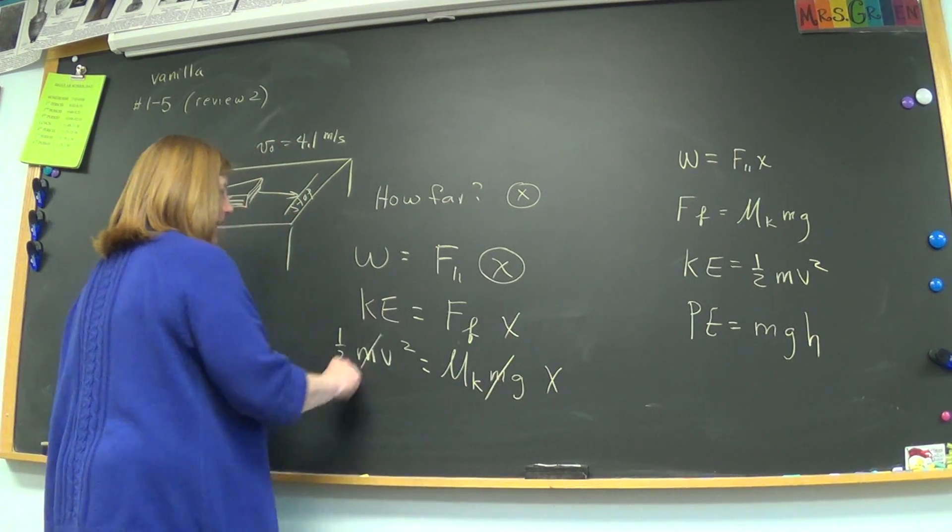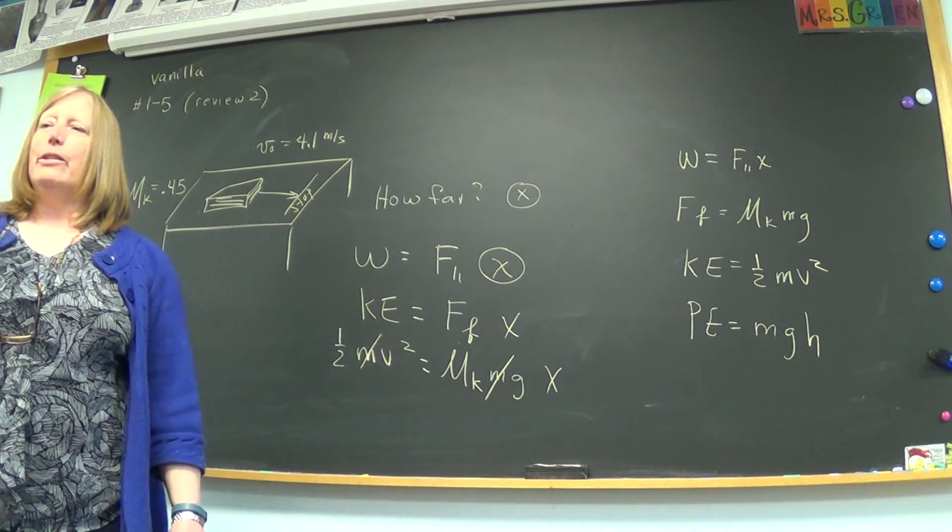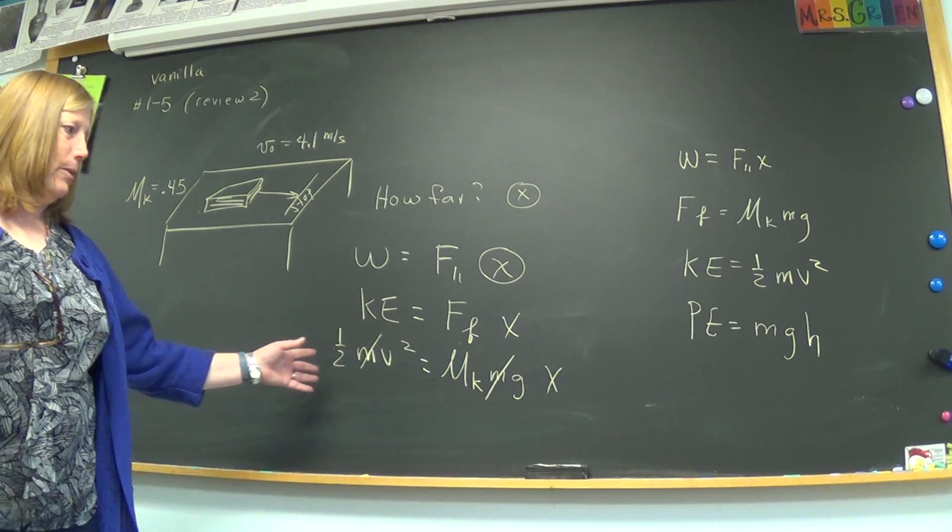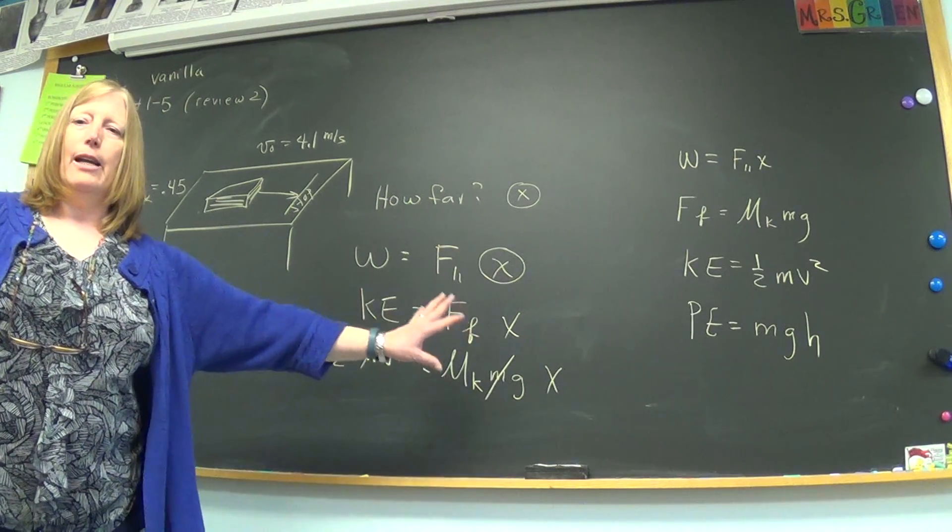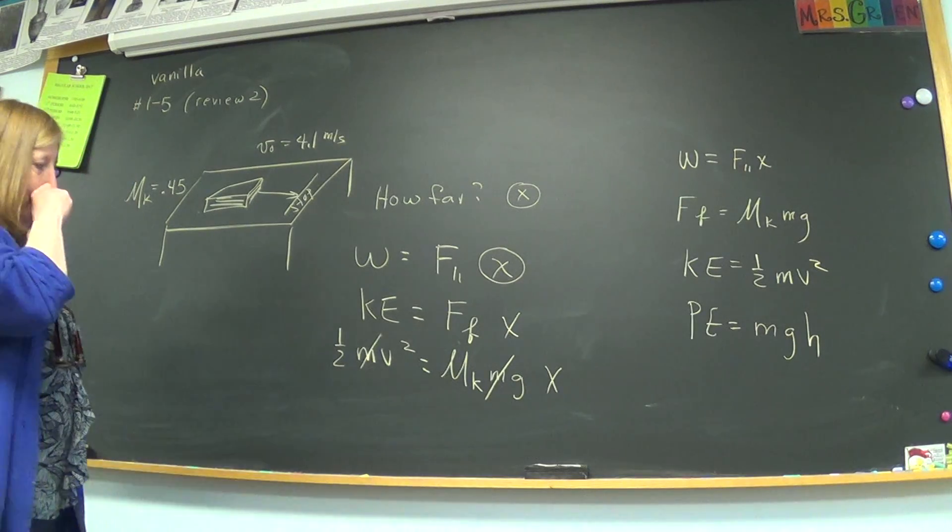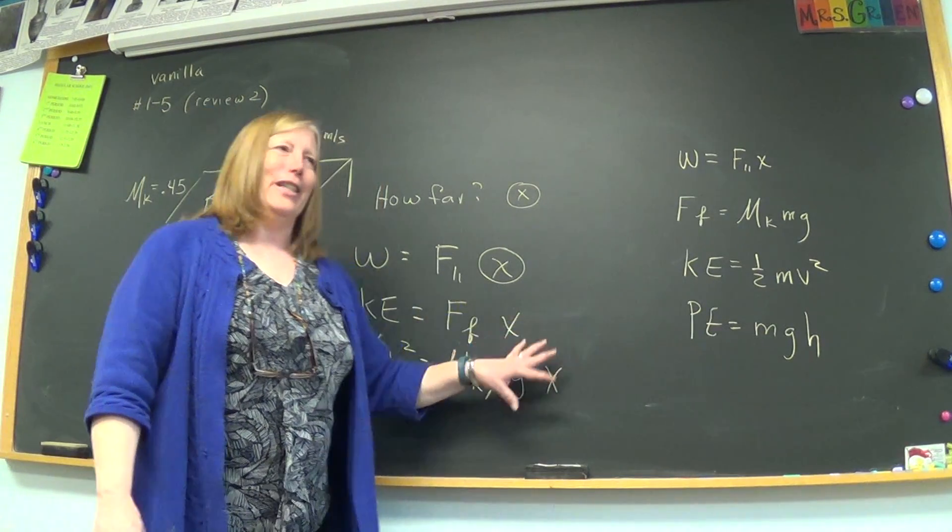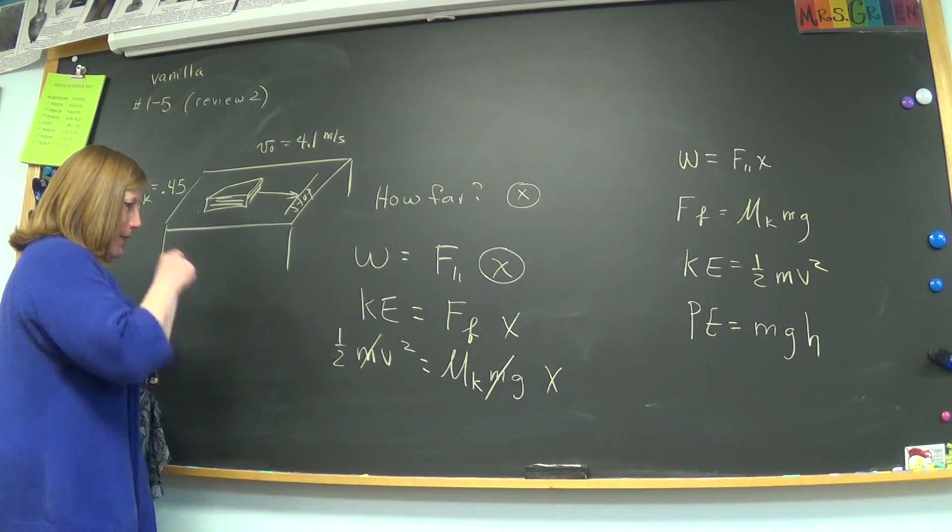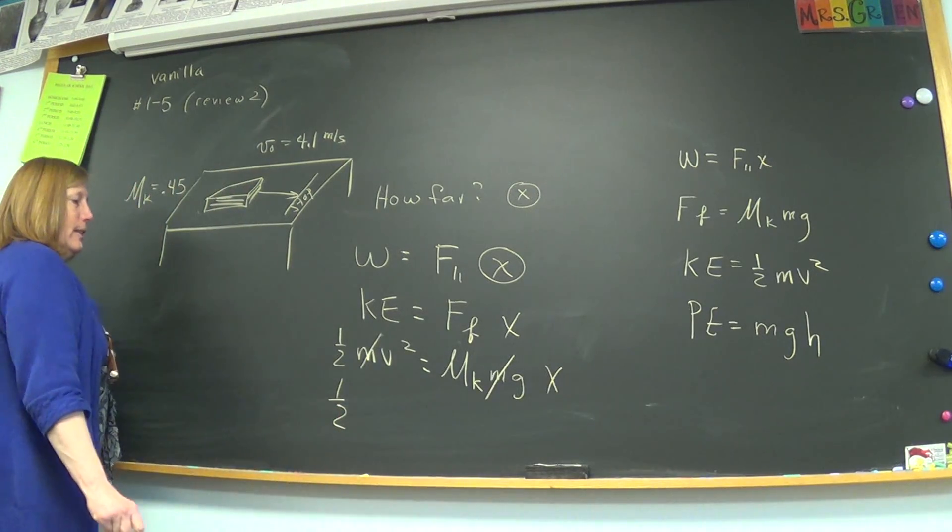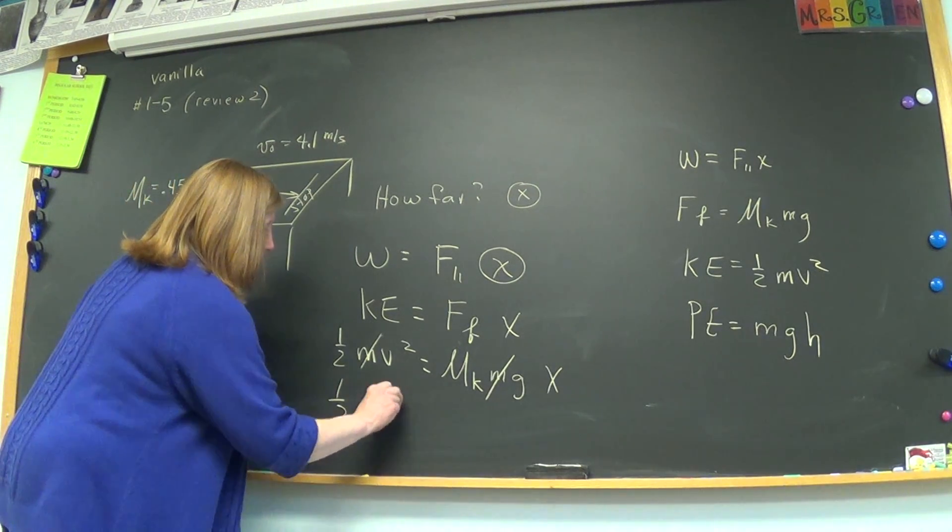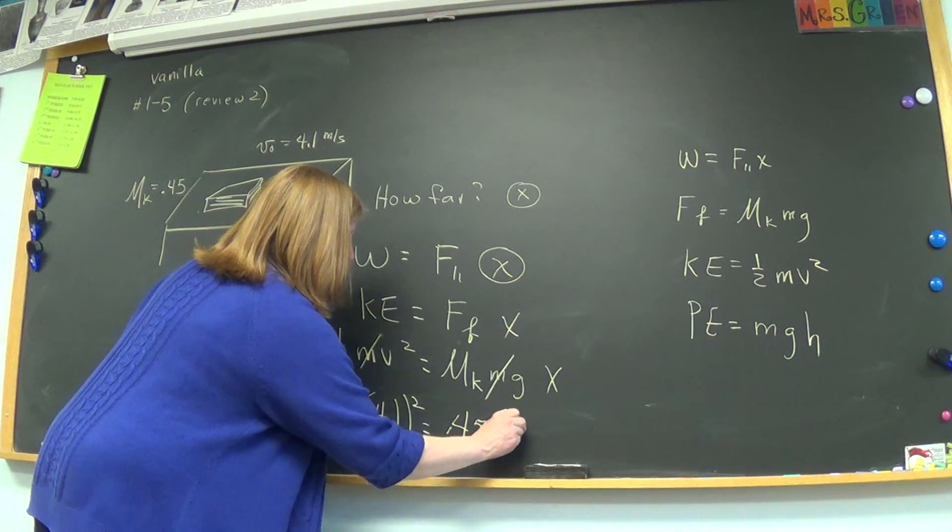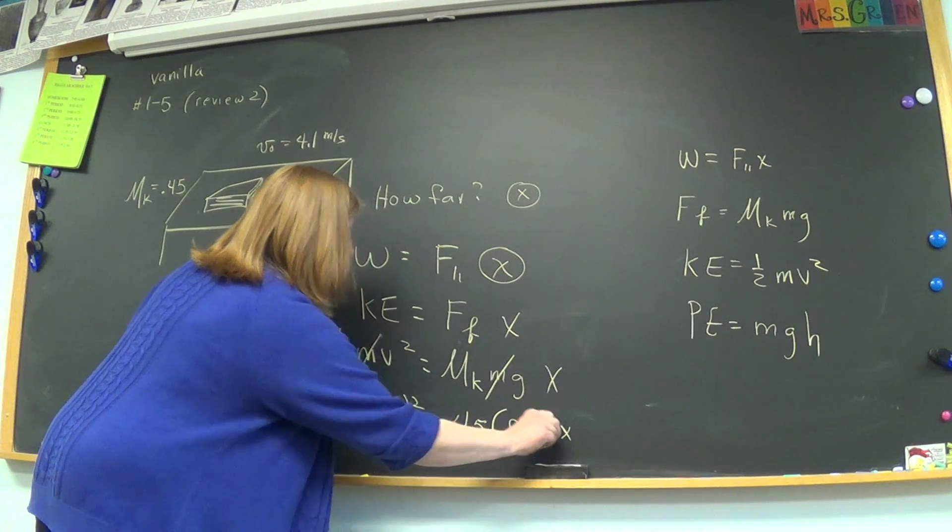I always cross out m because I have a great time crossing out things. I noticed in your work you did not and it'll come out the same. But when there's no plus or minus on either side, just everything held by multiplication and the m is in each term, you can cross it out. Even if there is a plus, if it's in every term, you can cross it out. But you know that, my mathematicians. So, putting in, Hannah, what goes in for v? 4.1. And what goes in for mk, Hannah? 0.45. And g? 9.8. Alright, tippy tap and tell me what you get for x.